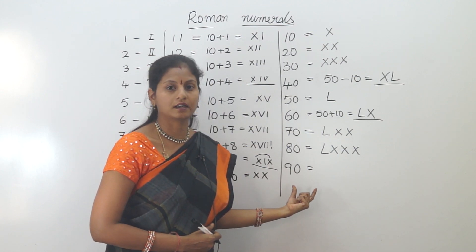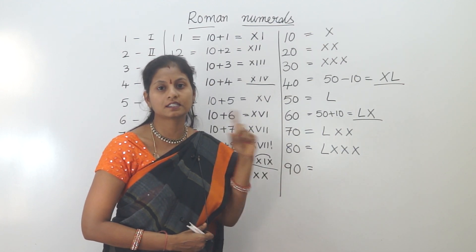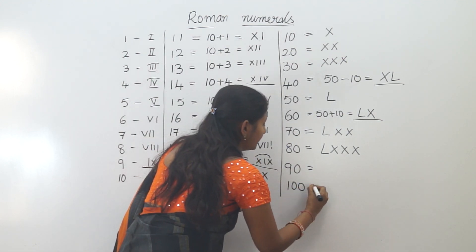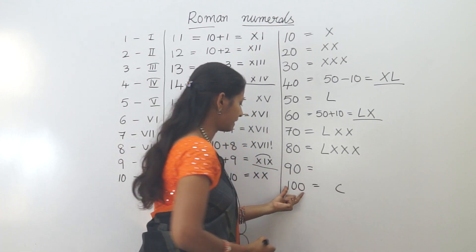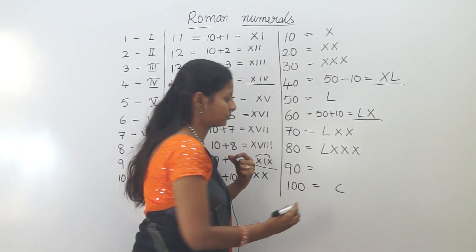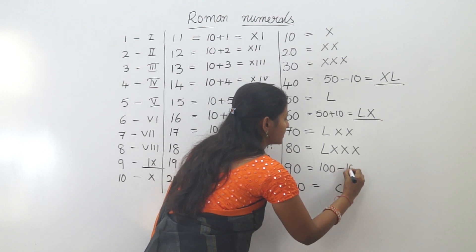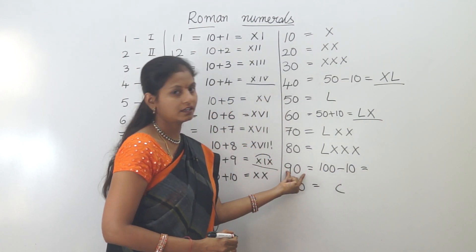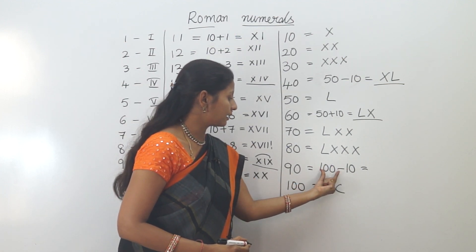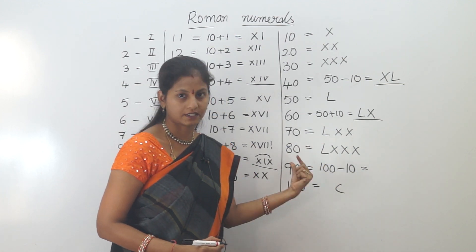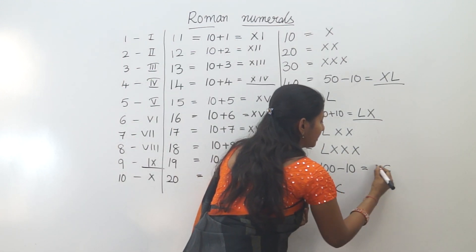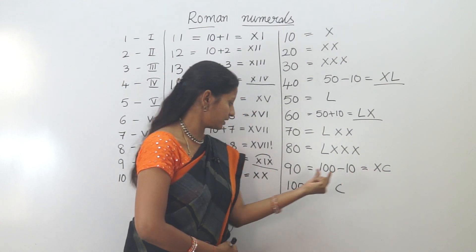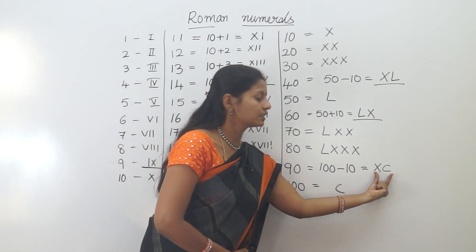For 90, we look at 100 — C is the symbol for 100. Ninety is 100 minus 10. We subtract X from C. So 90 is XC. Here, 100 (C) is on the right side and 10 (X) is on the left side, so XC equals 90.